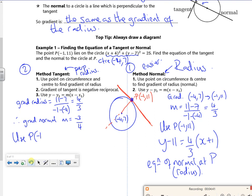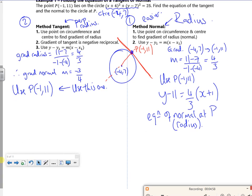Now, when I did the normal, it didn't really matter. I could use the center or P because both of them go through the line. But with the tangent, I need to use this one. Otherwise, I'll just get a line going through the center. So it would be y - 11 = (-3/4)(x + 1). So that's that bit done.